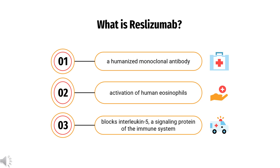The FDA approved Reslizumab, U.S. trade name Cinqair, for use with other asthma medicines for the maintenance treatment of severe asthma in patients aged 18 years and older on March 23, 2016. The European Medicines Agency recommended the granting of a marketing authorization for Reslizumab, trade name Cinqaero, intended as add-on treatment in adult patients with severe eosinophilic asthma on June 23, 2016.